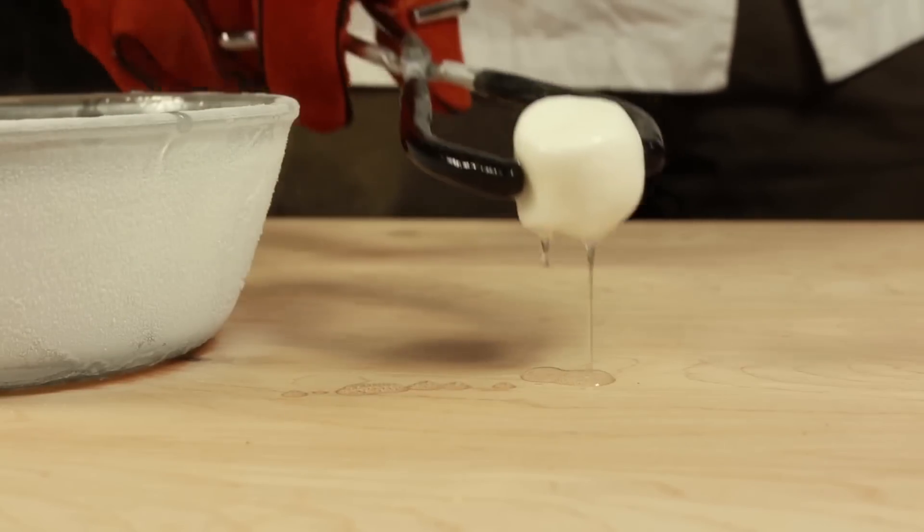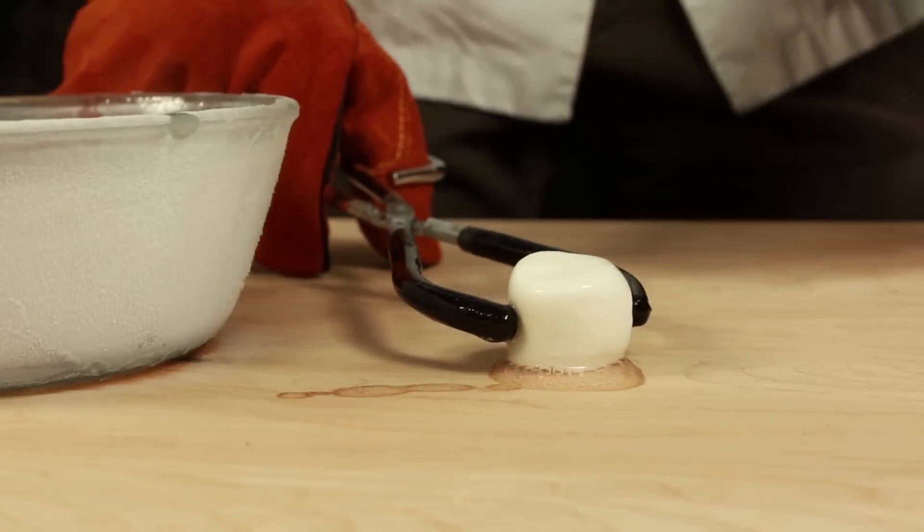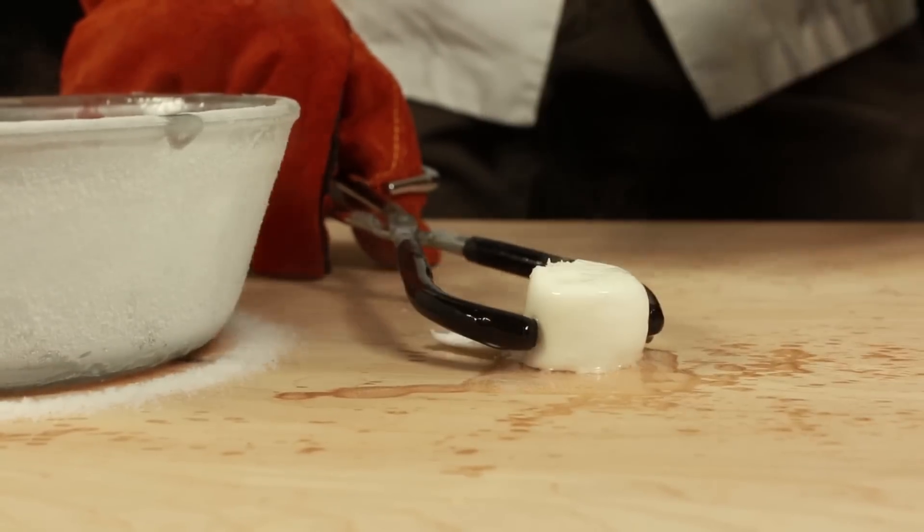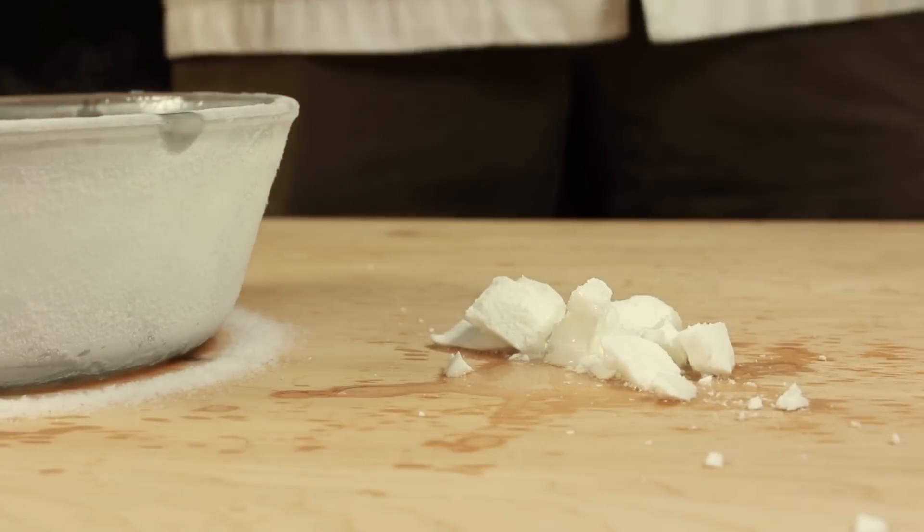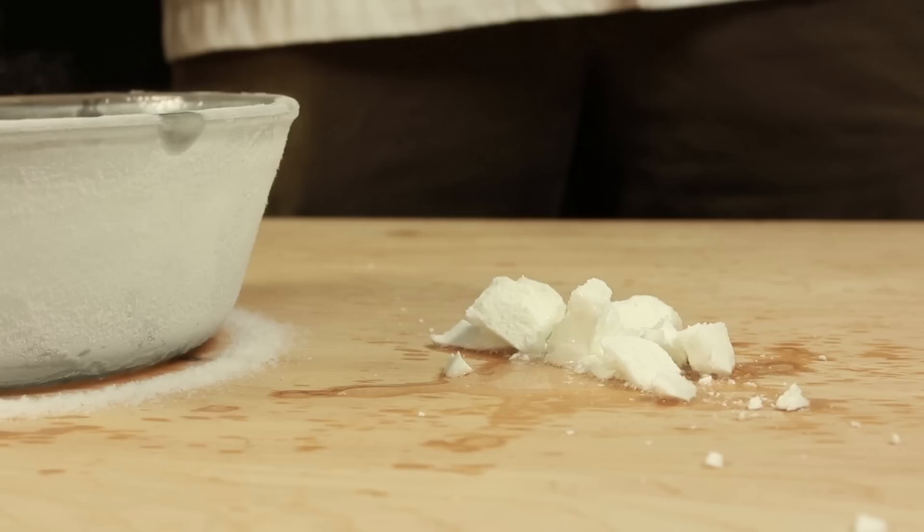On the other hand, if you submerge a marshmallow in the isopropyl alcohol it will take a few minutes to freeze solid. This is because marshmallow is actually a really good insulator and the outer layers will protect the inner core from freezing quickly.